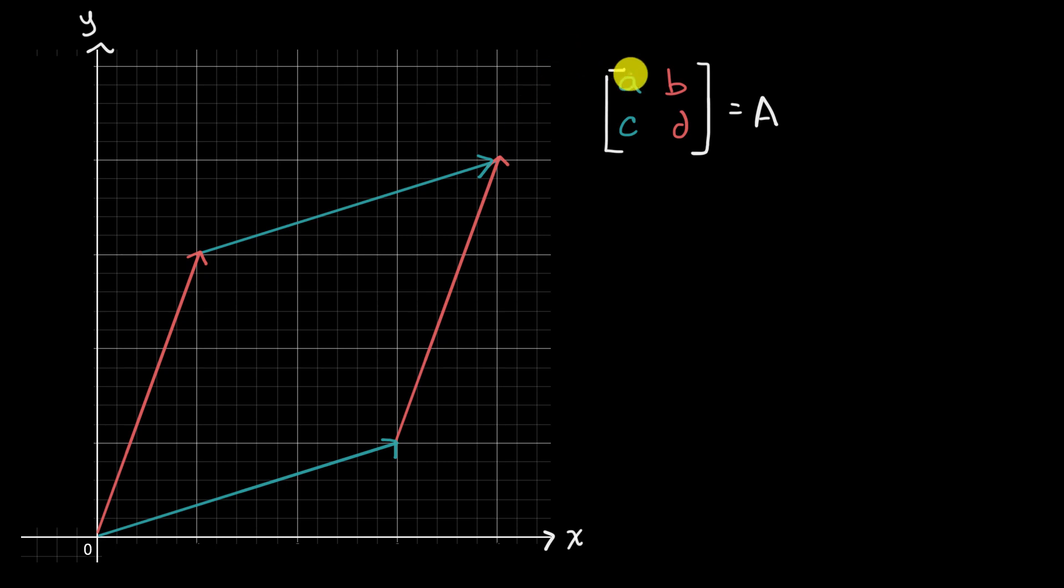So for example, I have this column vector right over here, AC. So that's this blue vector. This distance right over here goes A in the X direction, so this distance is A. And then it goes C in the Y direction, so this distance is equal to C. And so this distance up here is also equal to A, and this is also equal to C.